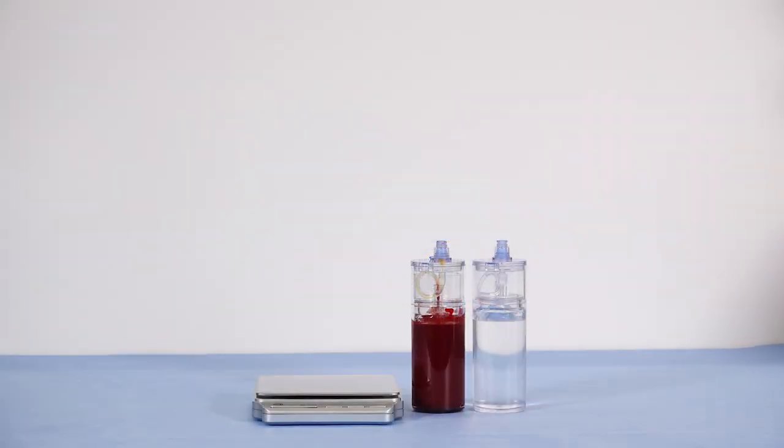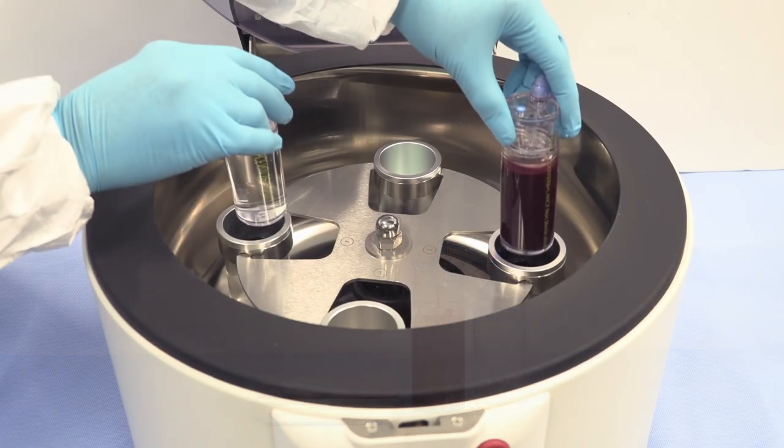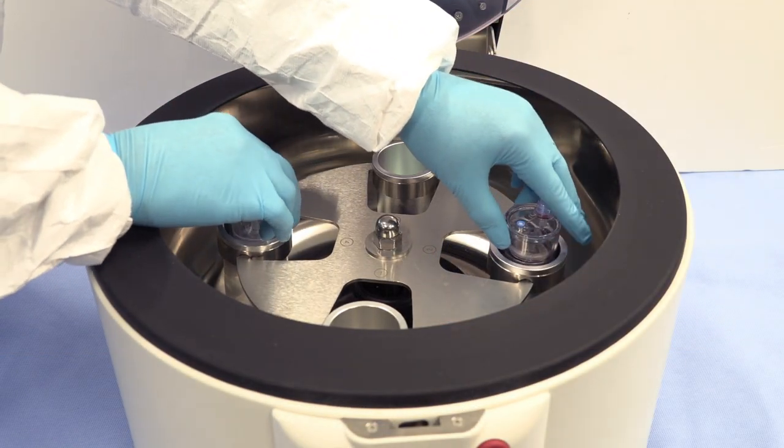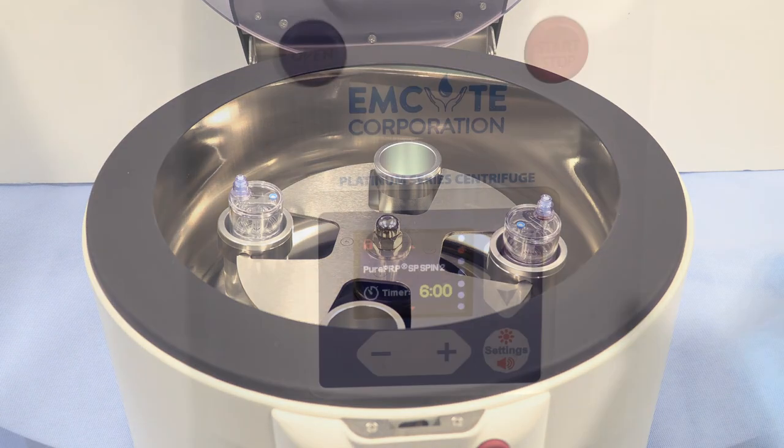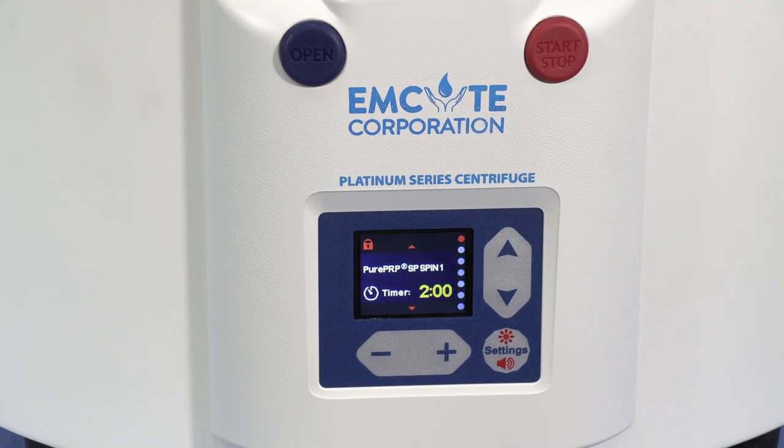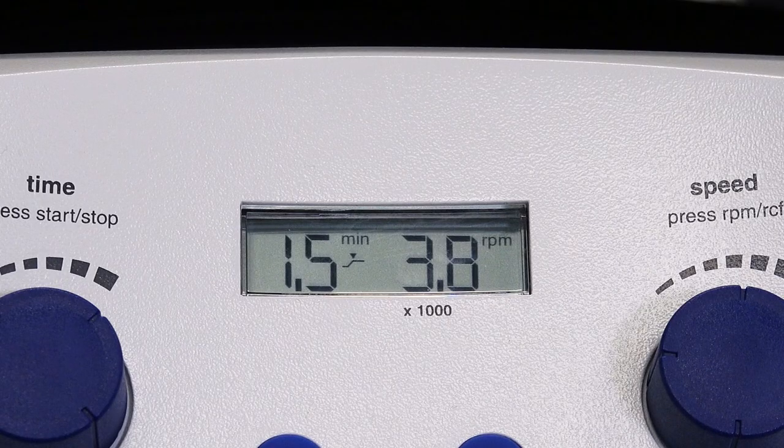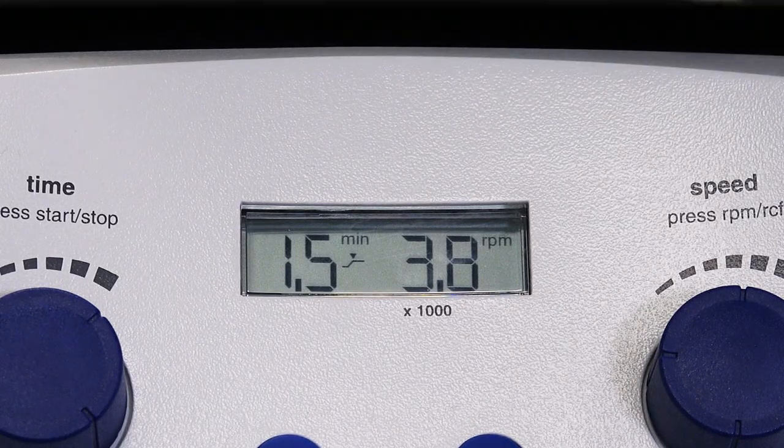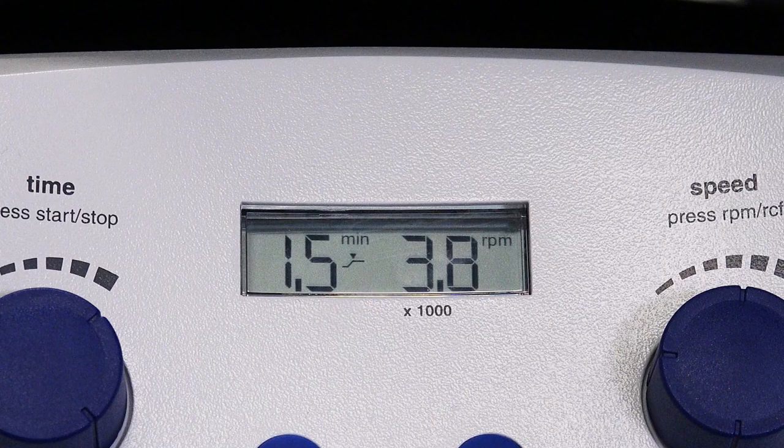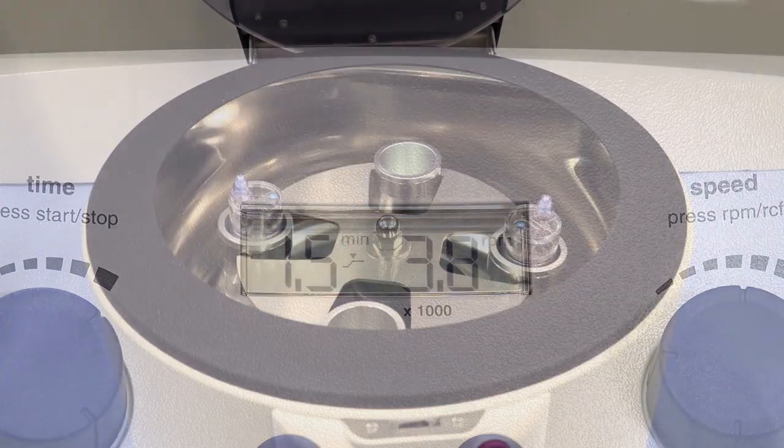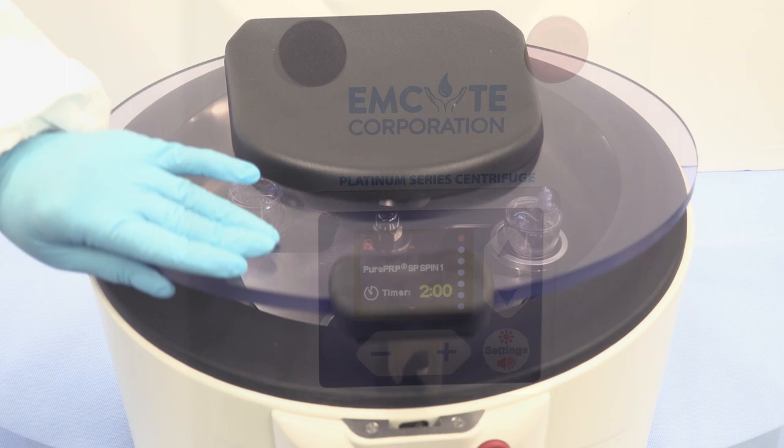Use the counterbalance device to counterbalance with equal volume. Place both devices in the centrifuge rotor at opposite ends. Set the Platinum Series Centrifuge at Pure PRP SP Spin 1. Set the Executive Series Centrifuge at 1.5 minutes and 3800 RPMs. Close the centrifuge lid and press Start.